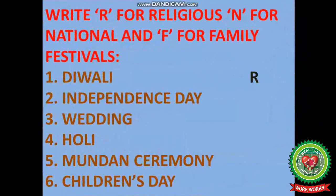Next, write R for Religious, N for National, and F for Family Festivals. First is Diwali. Second is Independence Day. Third is Wedding. Fourth is Holi. Fifth is Mundan Ceremony. Sixth is Children's Day. As Diwali is celebrated by the people of a particular religion, it is a religious festival, so we write R here. The first one is done for you — now think and do the rest by yourself.